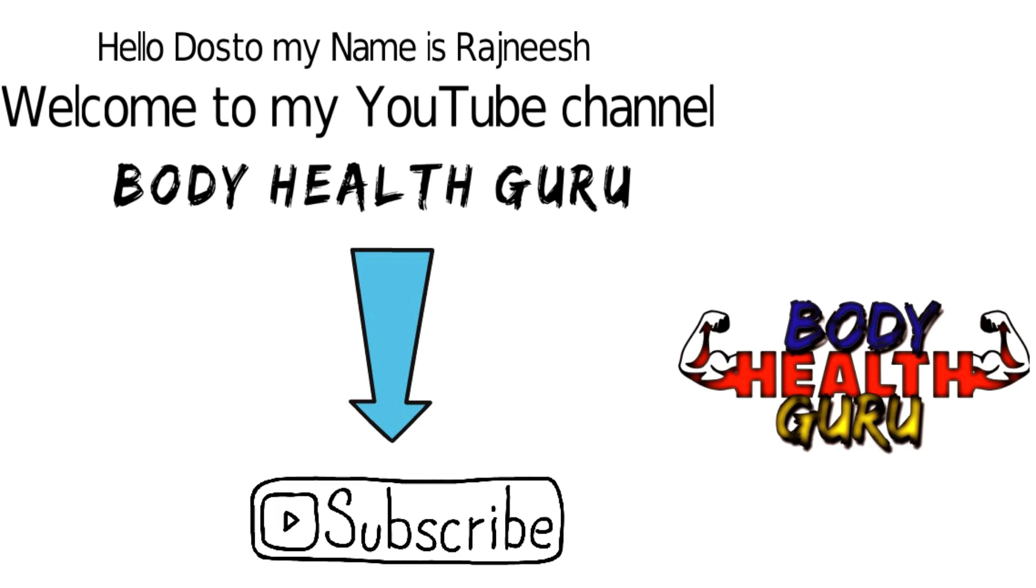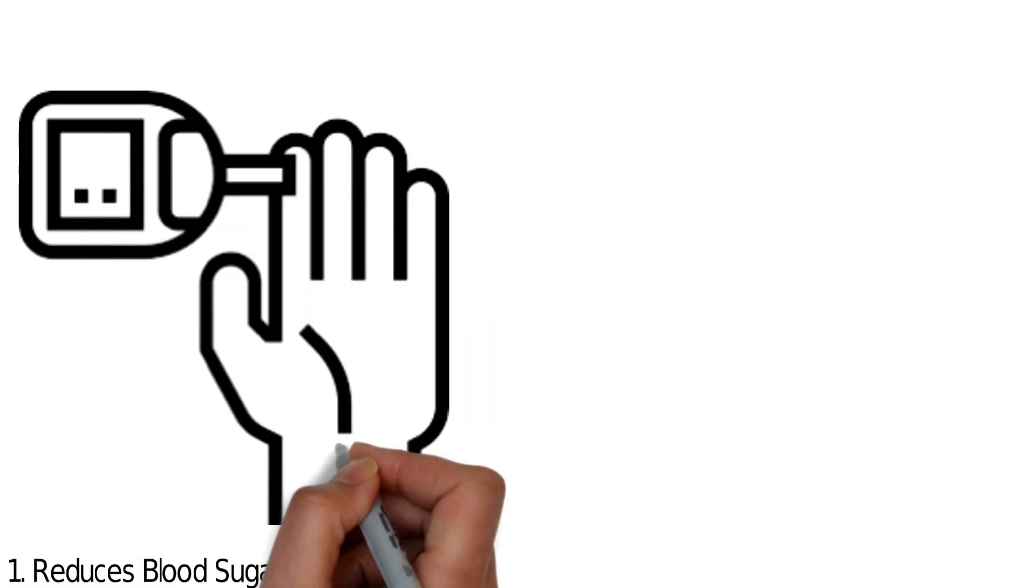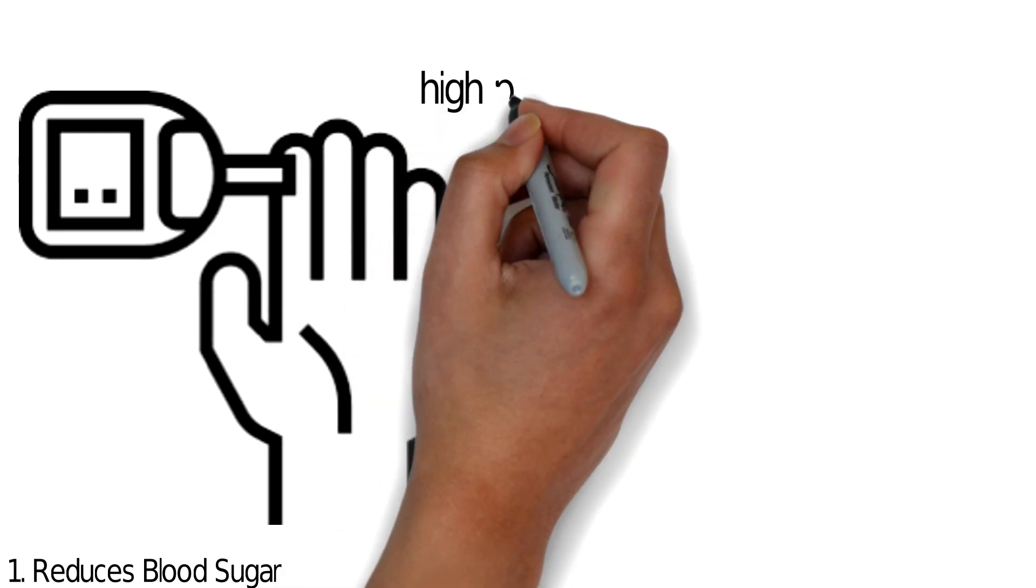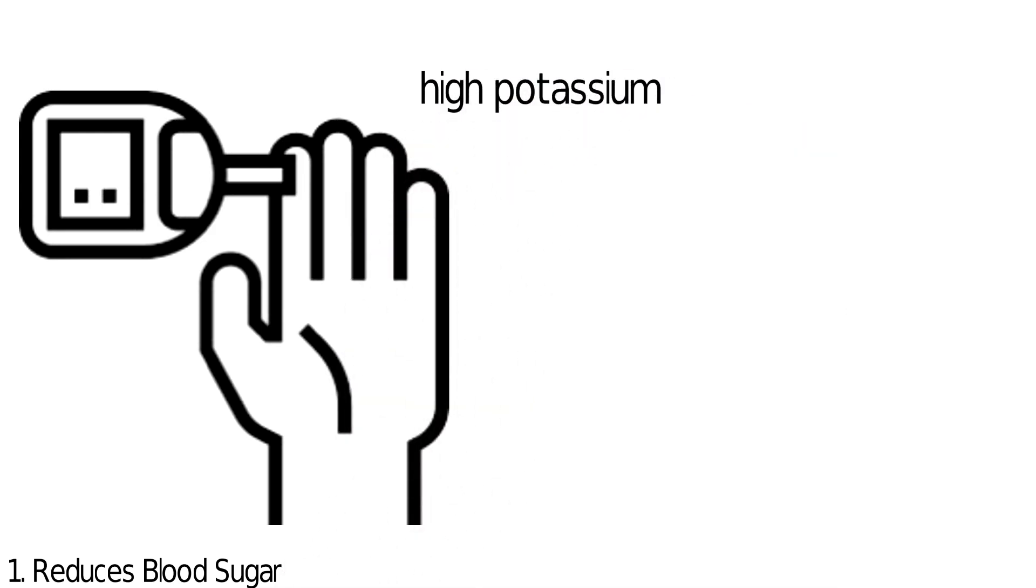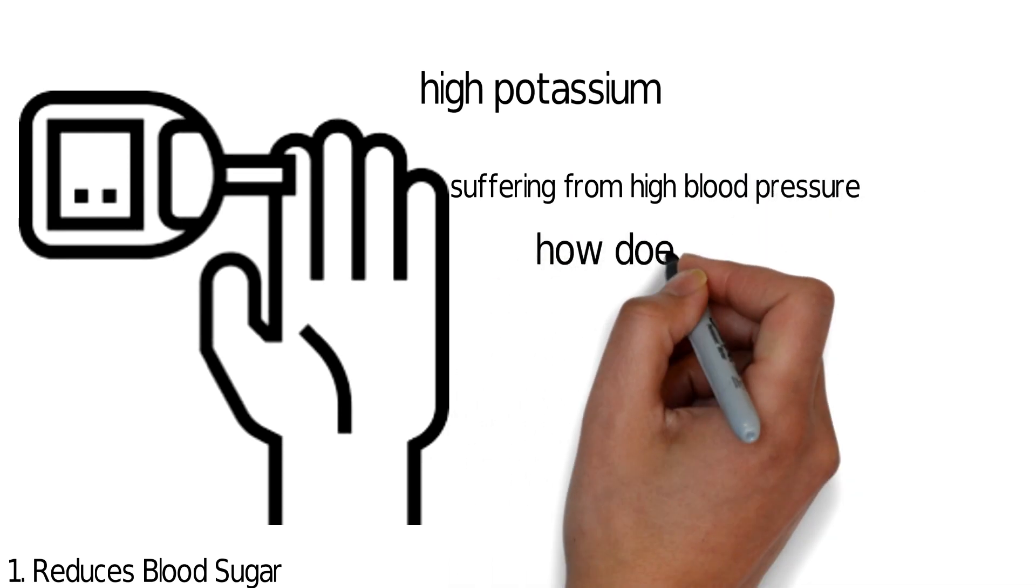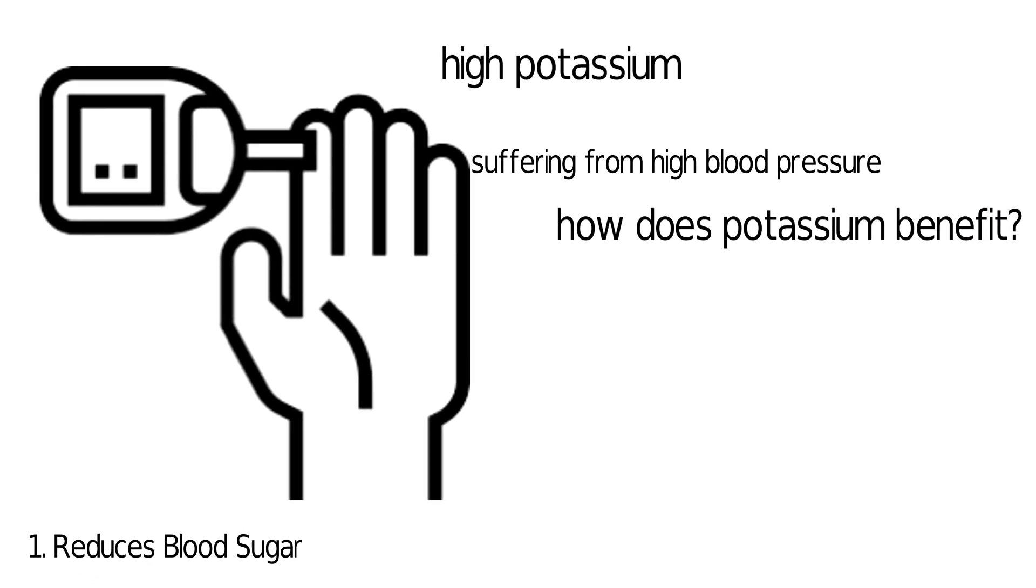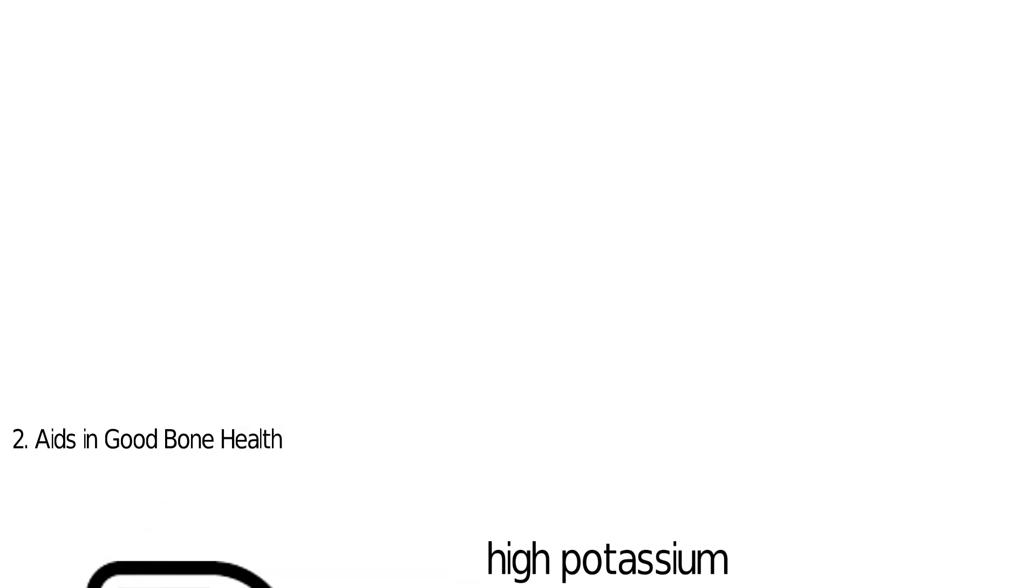So the first one: reduce blood sugar. Spinach is said to have high potassium content that is usually recommended for people suffering from high blood pressure. How does potassium benefit a person suffering from high blood sugar? Well, potassium reduces the effect of sodium in the body.